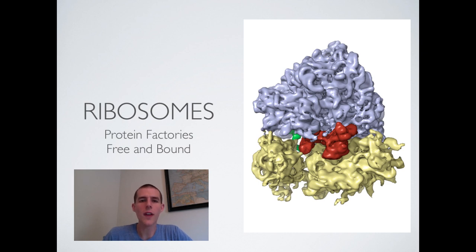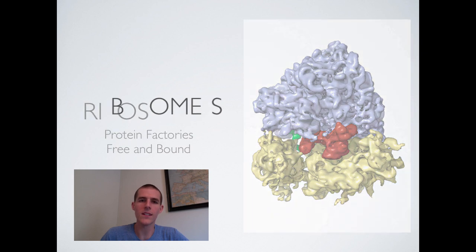Also know that there are two types you've got free ribosomes and you've got bound ribosomes. When we talk about our endoplasmic reticulum in a second that will become more clear but right now I just want you to realize that some ribosomes are bound to the surface of the endoplasmic reticulum others float freely in the cytoplasm.